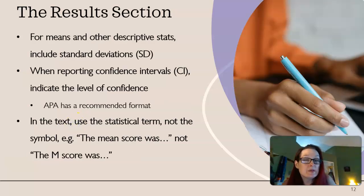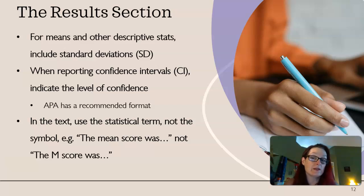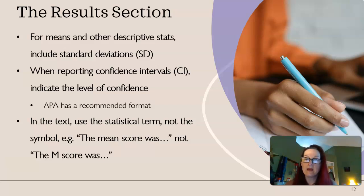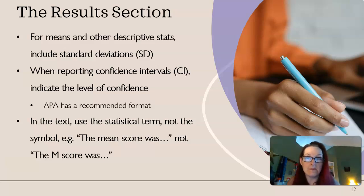For means and other descriptive statistics, include standard deviations, or SD. When reporting confidence intervals, or CI, indicate your level of confidence. APA actually has a recommended format for that, so you can check your 7th edition APA handbook, or you can look at the Purdue OWL's very comprehensive 7th edition APA style guide. In the text, use the statistical term, not the symbol. So if you're in the text of a sentence as opposed to in parentheses, use the word mean rather than the M — the mean score was, not the M score was.